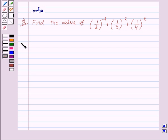Let's see its solution. We need to find the value of 1 upon 2 to the power minus 2 plus 1 upon 3 to the power minus 2 plus 1 upon 4 to the power minus 2.